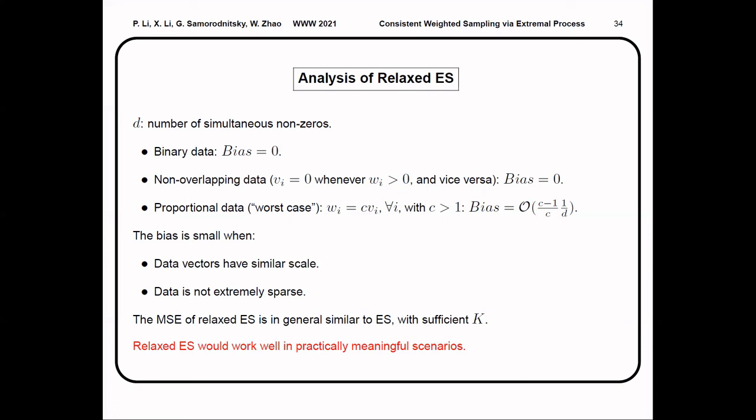In general, the bias of relaxed ES is small when the data vectors have a similar scale and the data is not extremely sparse. In other words, relaxed ES will work well in practical, meaningful scenarios. We would like to remark that this is the first result in literature that theoretically characterized the behavior of the relaxed or the 0-bit consistent weighted sampling methods.